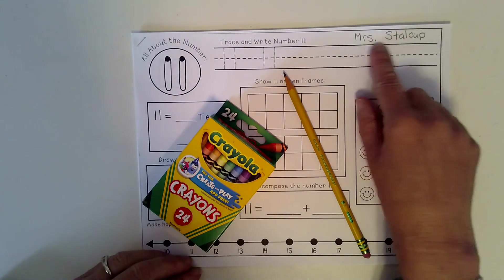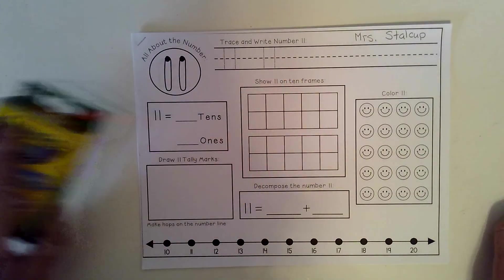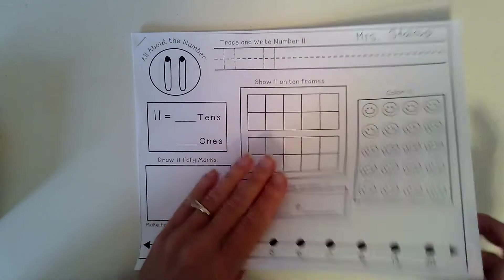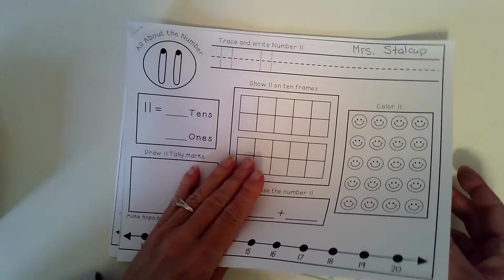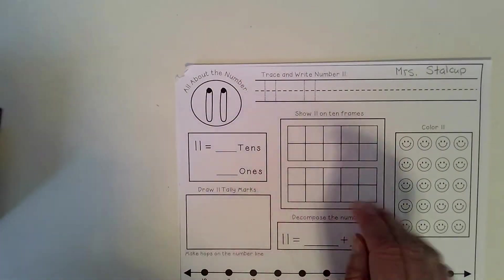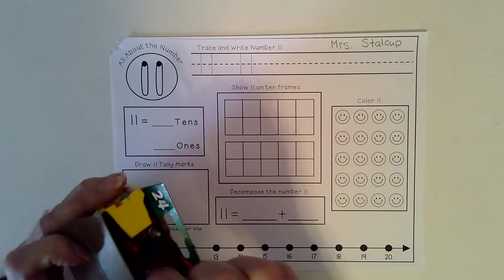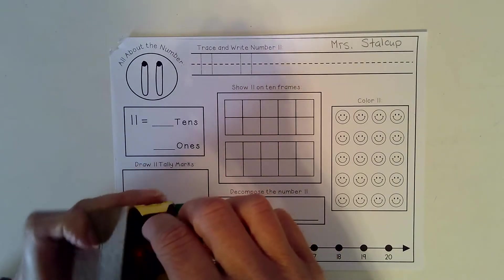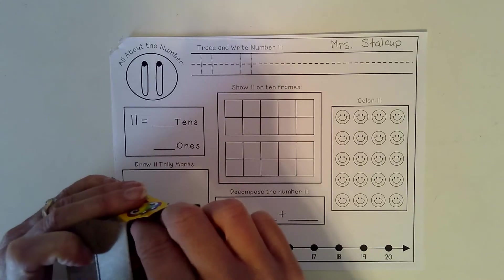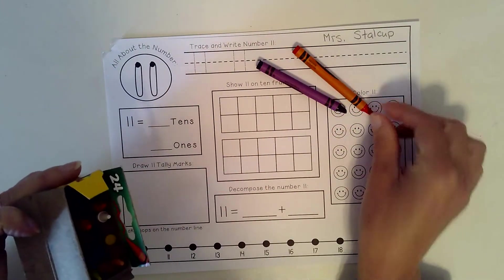Let's put our name on the top. And then I am going to take my number 11 off the packet. So I'm just going to pull it off so that it's easier to work with. Now I am going to get two colors of crayons to work with. One color I'm going to use for the tens, and the other color I'm going to use for the ones.